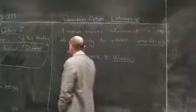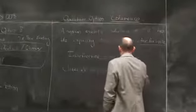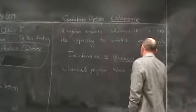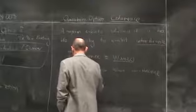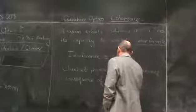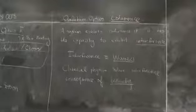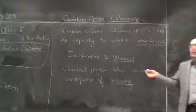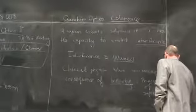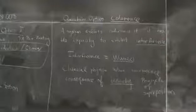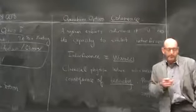In classical physics, wave interference is a natural consequence of linearity — meaning that because waves are solutions to linear differential equations, we have the principle of superposition. If we have any two solutions to a wave equation, then their linear combination is also a solution. And because of that, we have the property of interference.